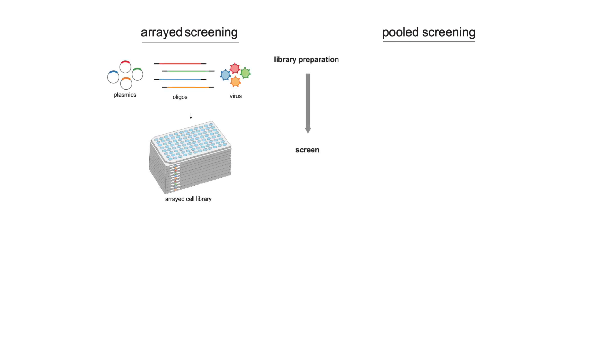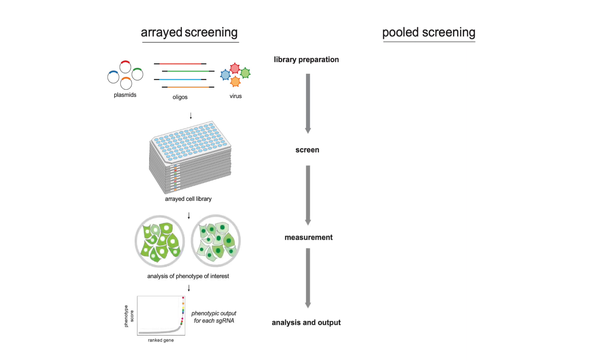Genetic screens are a powerful tool to identify the genes relevant to biological processes or disease progression. In general, they come in two flavors, arrayed and pooled. In arrayed screens, genetic perturbations are introduced into cells across different wells of a multi-well plate. A cell-based assay, such as an imaging assay, is performed and each perturbation is assigned a phenotypic score. Hits are then called based on difference from non-targeting controls.